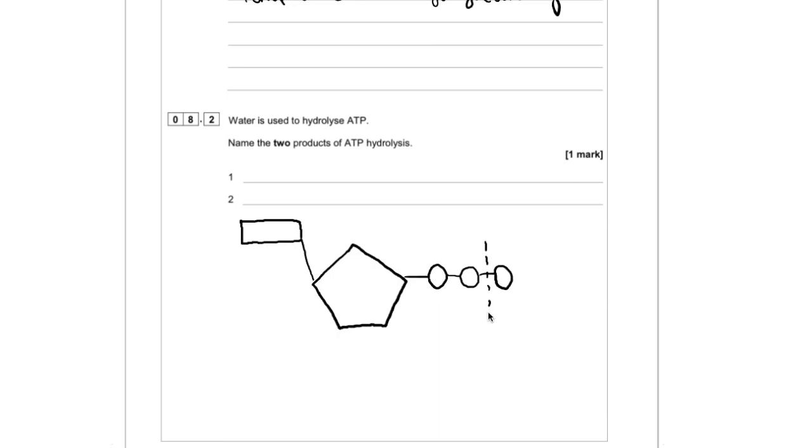So our products would be adenosine diphosphate and an inorganic phosphate. And just a side note about this as well, because I've seen it in lots of other questions, is that this releases energy, which can be used for lots of different reactions in the cell.